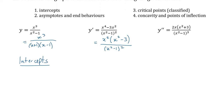Finding intercepts: the y-intercept is when x = 0 — the top is zero and the bottom is negative one, so the y-intercept is 0. The x-intercept is when y = 0, which is when the top is zero, and the top is only zero at x = 0. So there's one intercept at (0, 0).